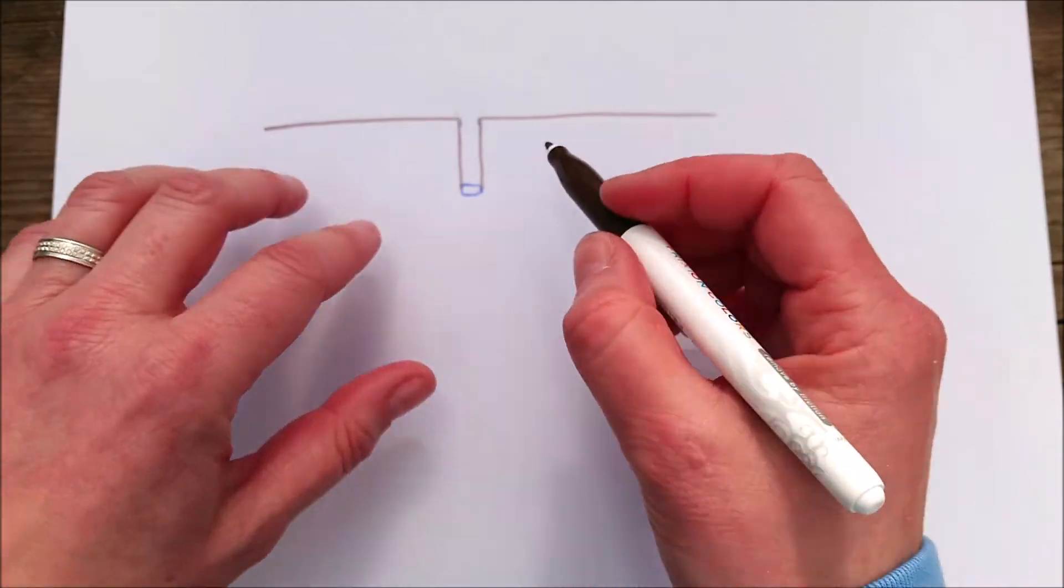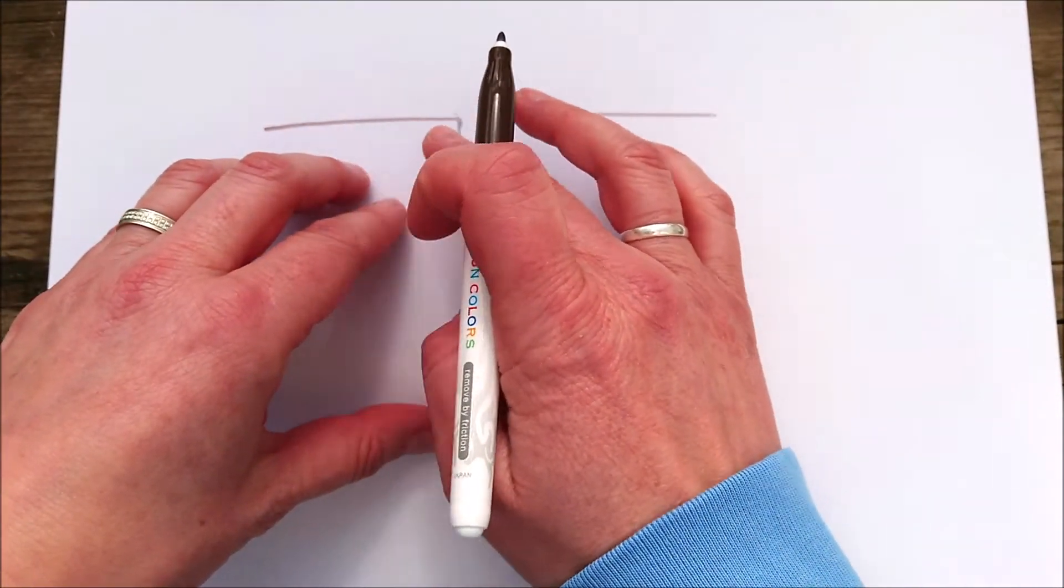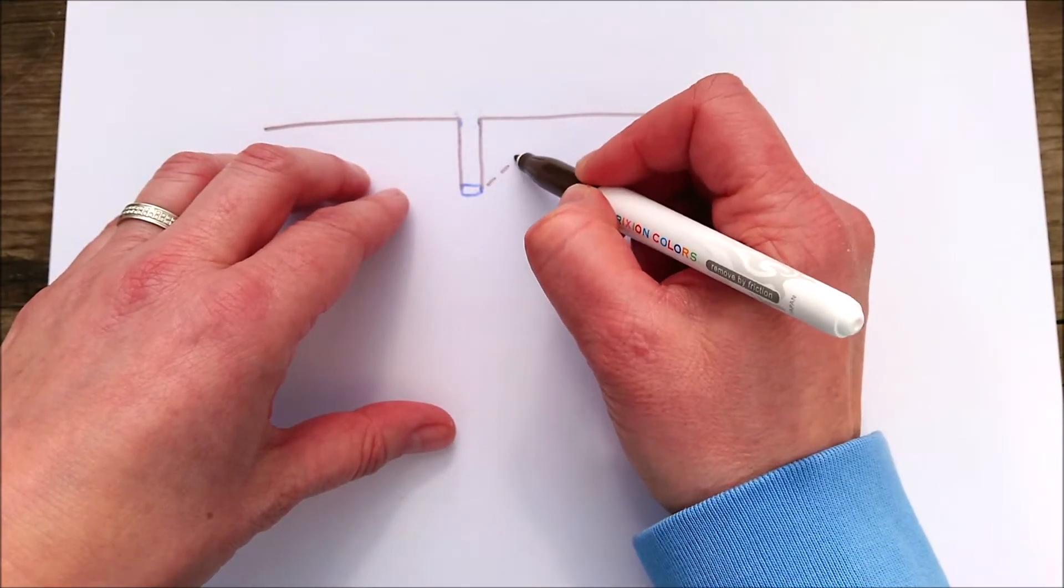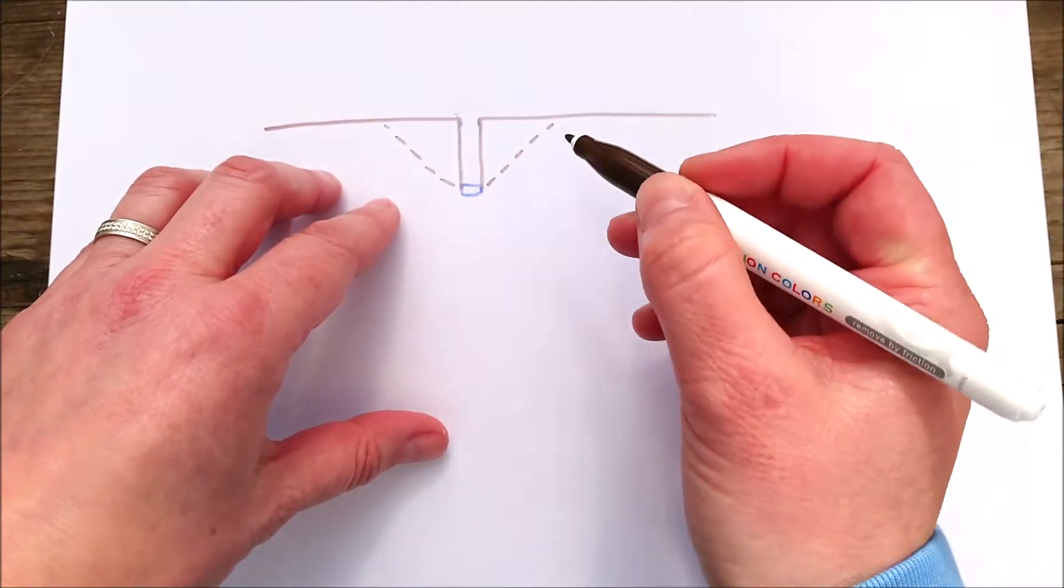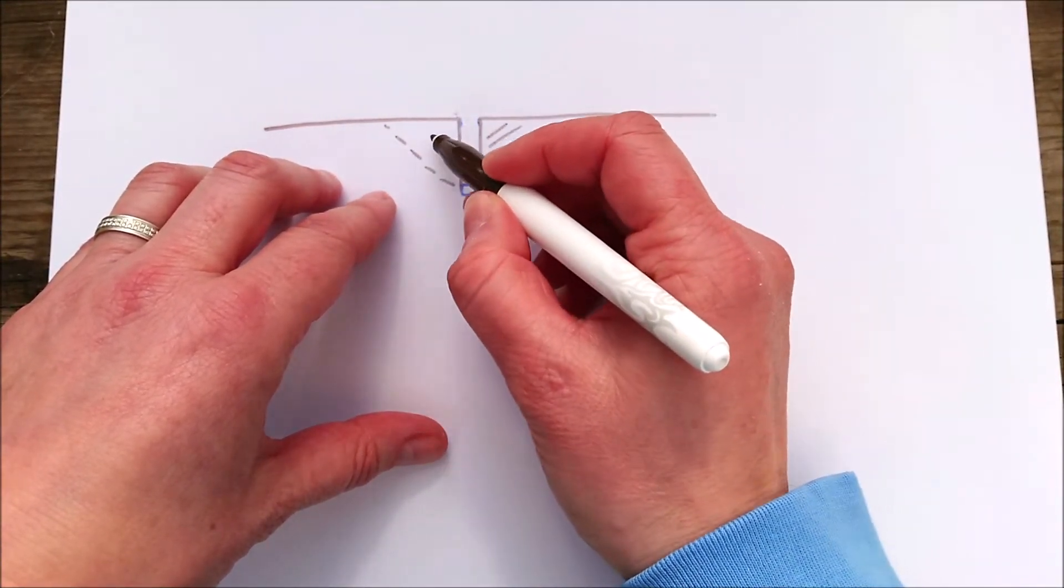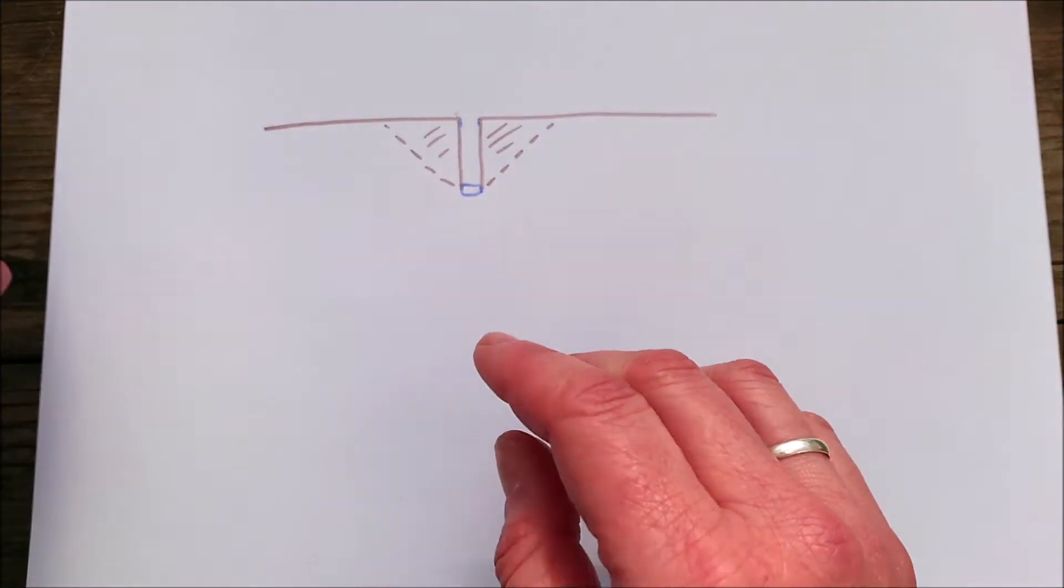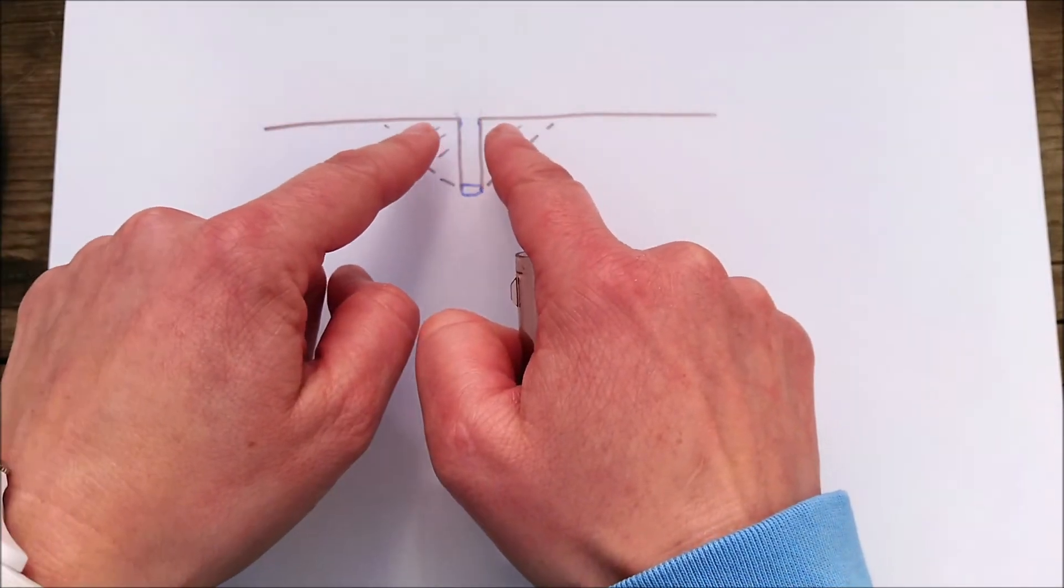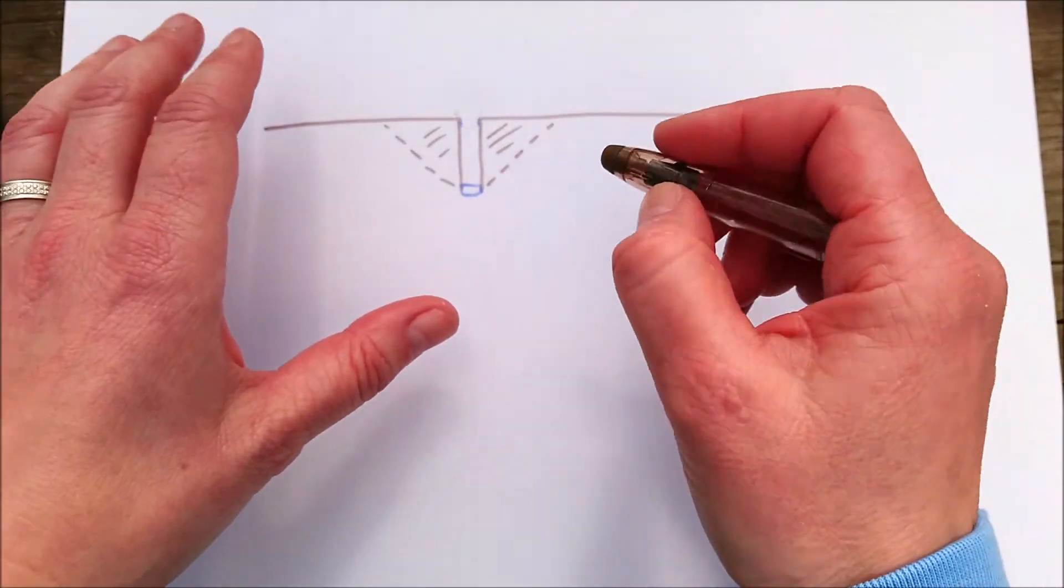Now the sides of this channel are therefore going to be quite unstable because there's nothing really to support them. So anywhere within these dotted lines is going to be vulnerable and likely to fall into that river. And so that's exactly what happens over time. The material here weathers and erodes, and it falls straight into the river at the bottom.